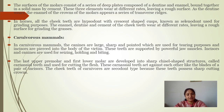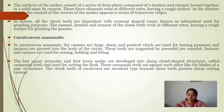In horses, all the cheek teeth are hypsodont with crescent-shaped cusps — selenodont — used for grinding purposes. The enamel, dentine, and cement of the cheek teeth wear at different rates, leaving a rough surface for grinding grasses. In carnivore animals, the canines are large, sharp, and pointed for tearing, and incisors are used to pierce the body of the victim. The last upper premolar and the first lower molar are developed into the carnassial structure — carnassial teeth — a carnivore speciality.